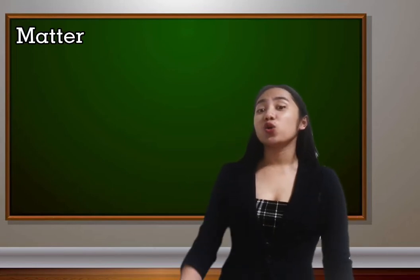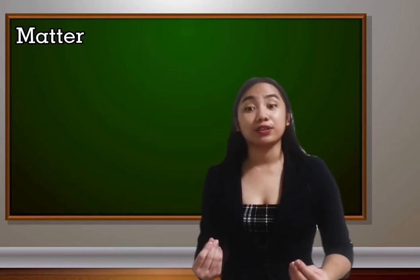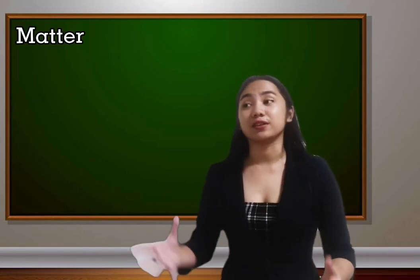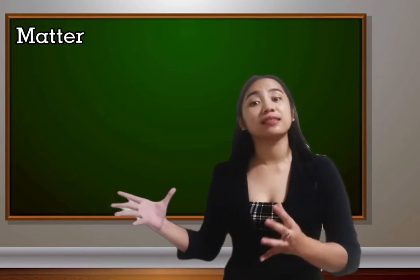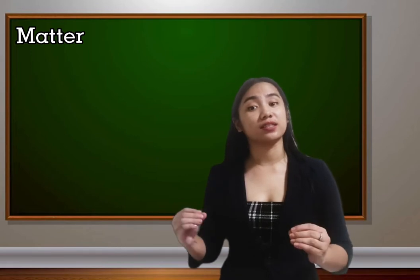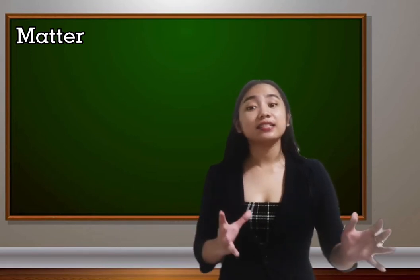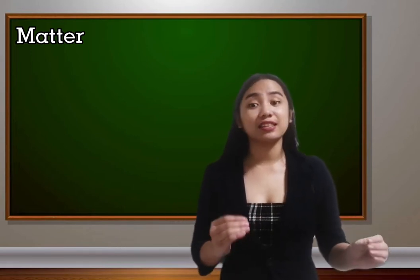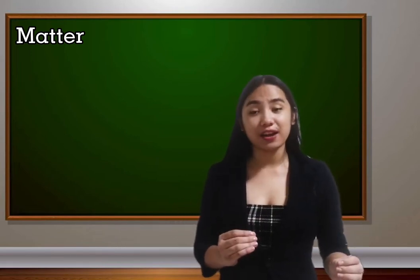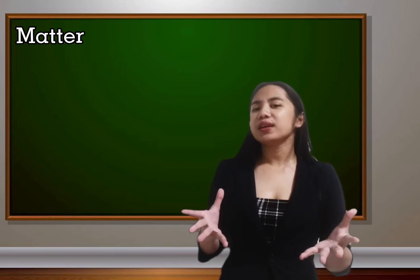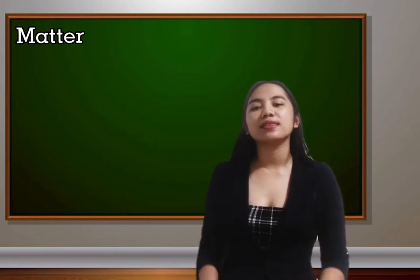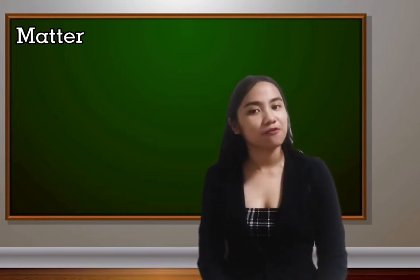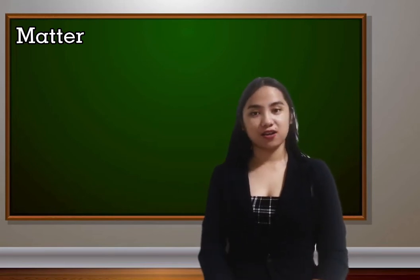So as we all know, we are surrounded by matter because everything that surrounds us that takes space and has mass is considered matter. Now who can tell me what the different states of matter are?